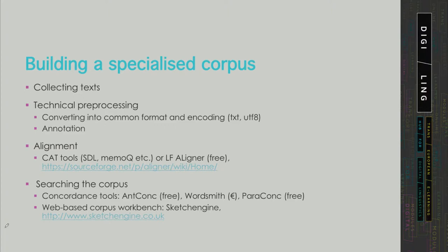To search the corpus, there are a number of tools available. There is a very simple but still quite useful tool, AntConc, which is free and exists in Windows and Mac versions. Its functionalities are not as broad as those of some commercial products, but AntConc is still quite useful, at least for initial checking and testing of the corpus. For offline tools locally installed on your computer, there is Wordsmith and Paraconc, which is the tool of choice if you want to query parallel texts.